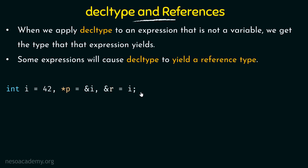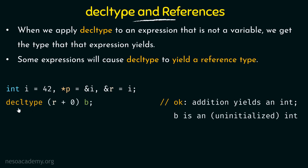Let's take an example. Here I am declaring an integer i which is initialized to 42, then we have a pointer p pointing to the address of i, and then we have a reference r which is bound to i. Here we are making use of decltype and we are saying r plus 0 and then b. Whatever is the type that would be yielded if this expression was evaluated, that would be assigned to b.